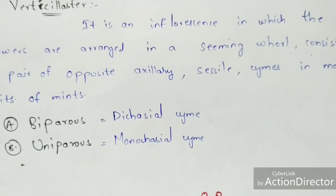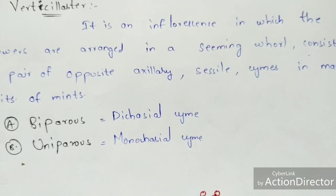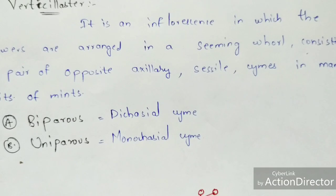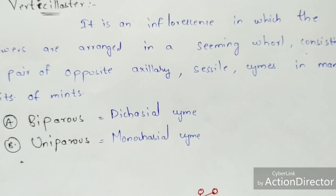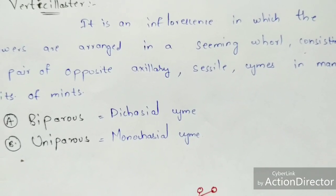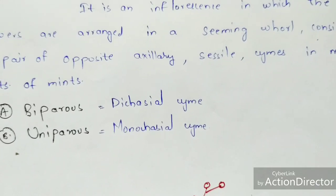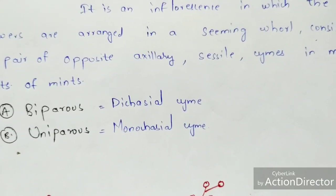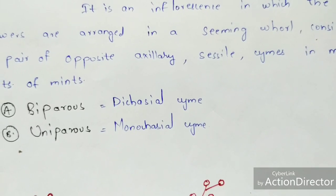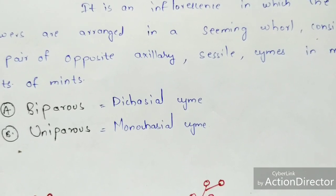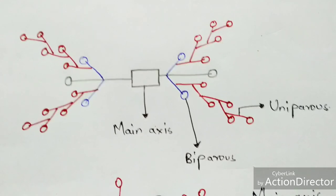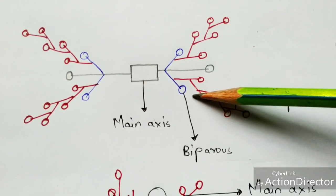The third type is verticillaster — an inflorescence in which flowers are arranged in a seeming whorl consisting of a pair of opposite axillary cymes. To understand verticillaster, you need to know two types of cymes: bipares, which exhibits dichasial cyme, and unipares, which exhibits monochasial cyme.